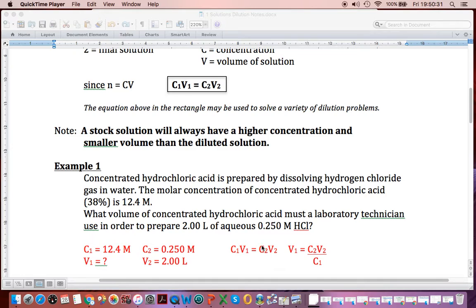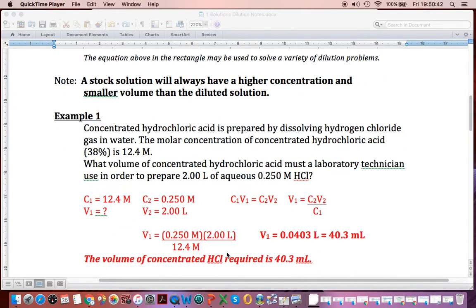And V1, rearranging, well, the C1 just has to hop. When it goes across the equal sign, it hops to the bottom. So now I have the right formula for this, and I simply plug in these numbers in the right spots. So you'll see I had my C2, 0.25 M. I had my 2 liters, went here. And I divide by my 12.4 M. I get 0.0403 liters.